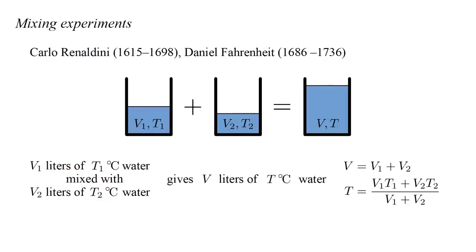Starting with freezing water and boiling water, that is T1 equals zero and T2 equal 100, Rinaldini used this idea to produce water of any desired intermediate temperature by varying the volumes accordingly. In effect, this equation served to define temperatures between 0 and 100 degrees Celsius.